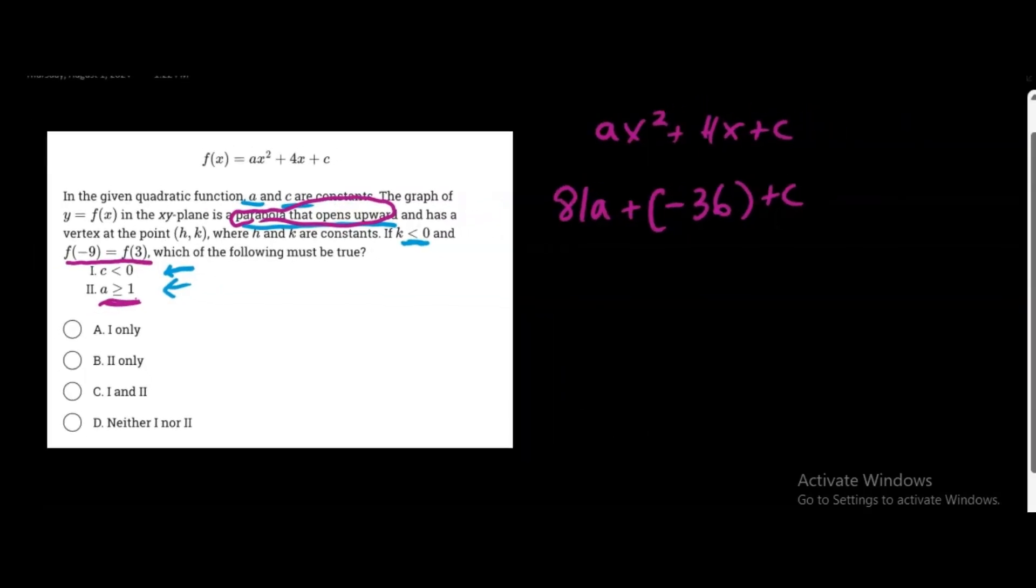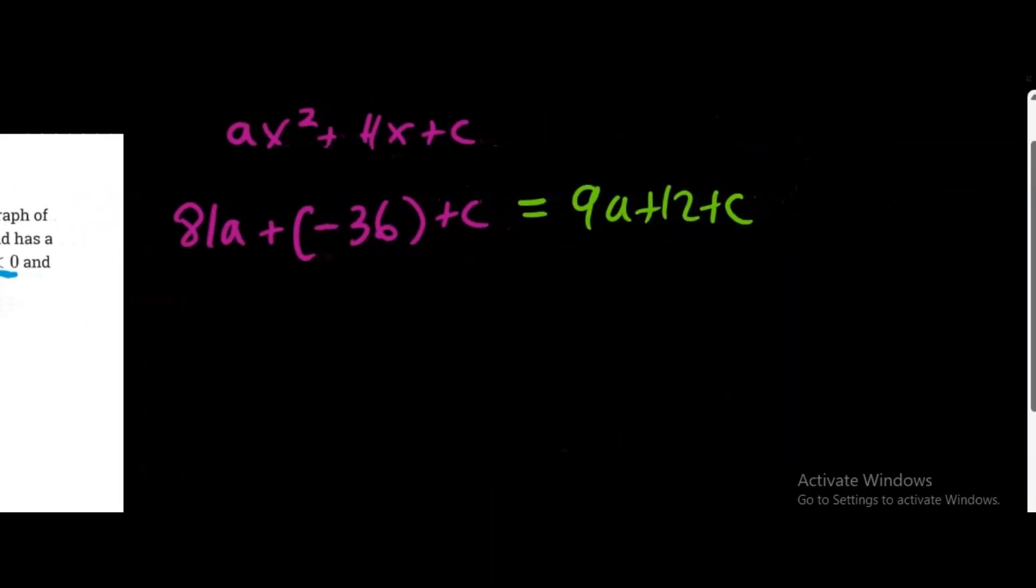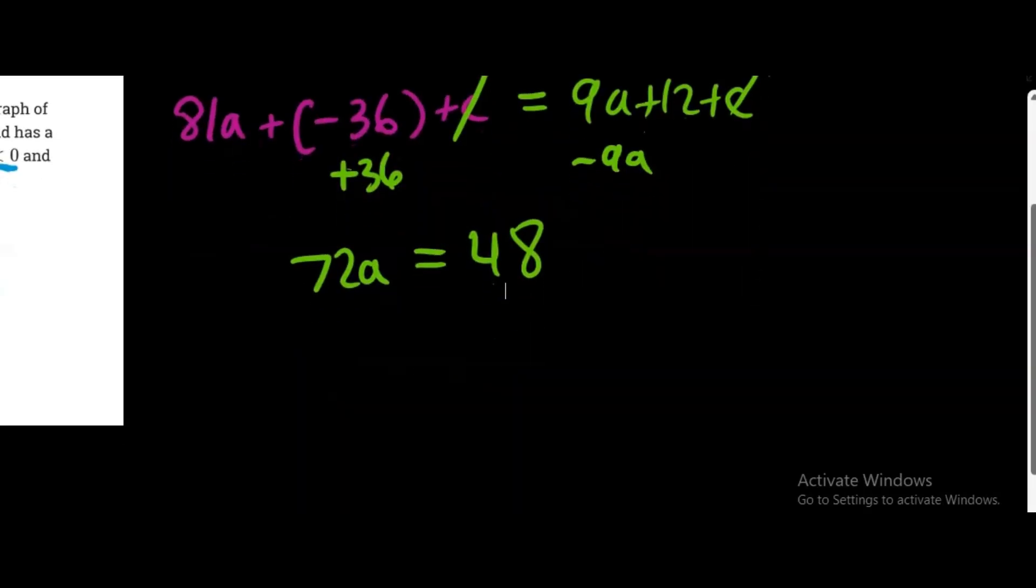And what you'll realize here is, we'll set this equal to f of 3. So if we plug in 3 for x, we get 9a plus 12 plus c. So this is the interesting part, is that the c's actually cancel out on both sides. And so now we're just left with one variable, and that one variable is a. And so we can solve for a. Let's add 36 on this side and subtract 9a on that side. So we get 72a equals 48. Divide both sides by 72. We get a equals 48 over 72.